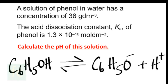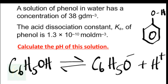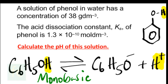Pause and have a go at this question on your own first. You see the formula of phenol, and there is its dissociation equilibrium equation. The H highlighted in yellow is the hydrogen that comes away to produce hydrogen ions, so phenol behaves as a monobasic acid. C₆H₅O⁻ and H⁺ will be produced in equimolar amounts.